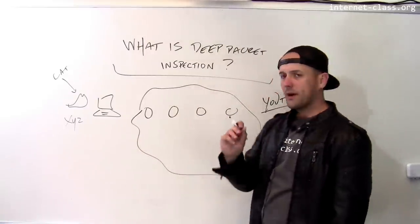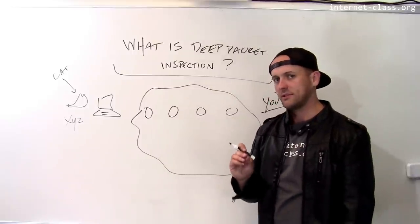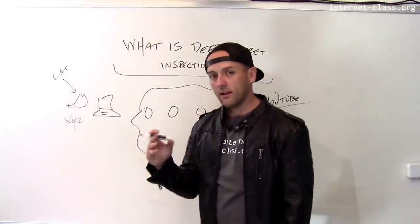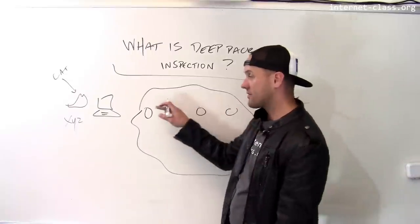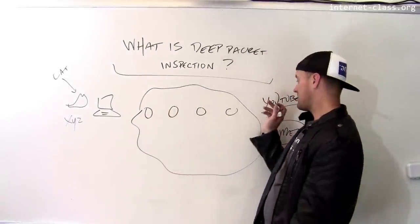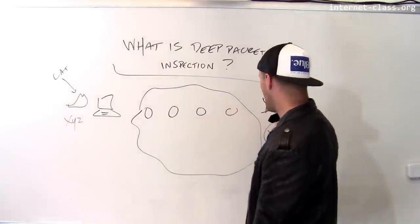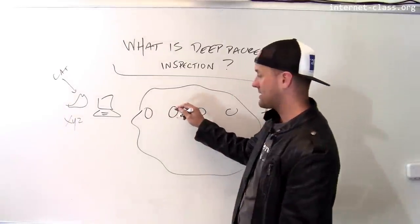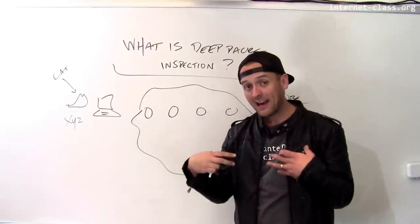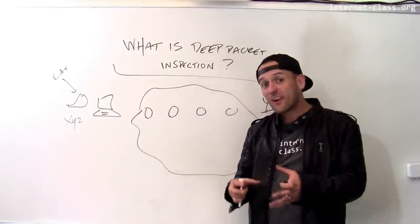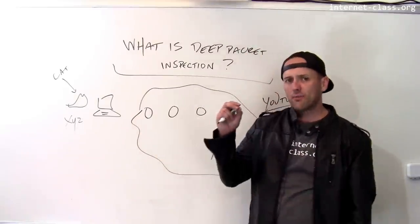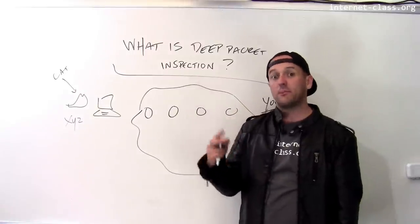And so all the router is supposed to be doing is looking at the destination address. But in certain cases, it might start to look at other things. So when routers are making decisions about how to route packets, what they might start to do is look at the source address. So when YouTube is streaming data back to Ziz, the router might look at the source address, unpack the packet, and look at the contents to try to figure out what's in there.